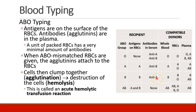This table should be familiar to you, and you should be able to create it from scratch — that's how well you should know this information. If the recipient has, for example, type B blood, they have B antigens. If they have B antigens, they certainly don't have B antibodies, but they do have anti-A antibodies. A patient with type O blood has no antigens, and therefore they have both antibodies.